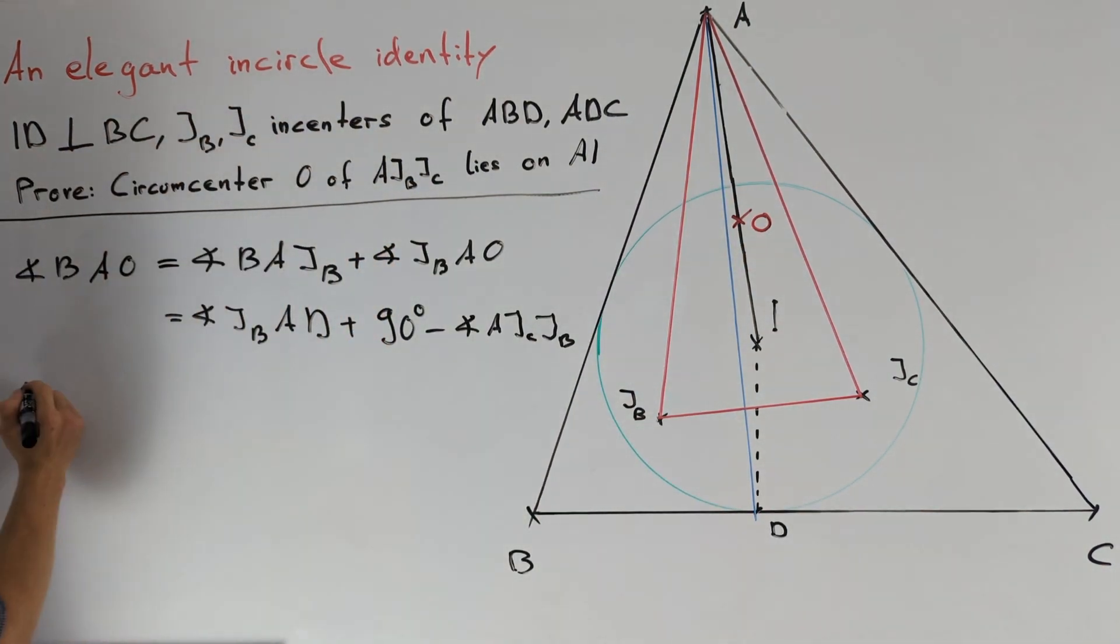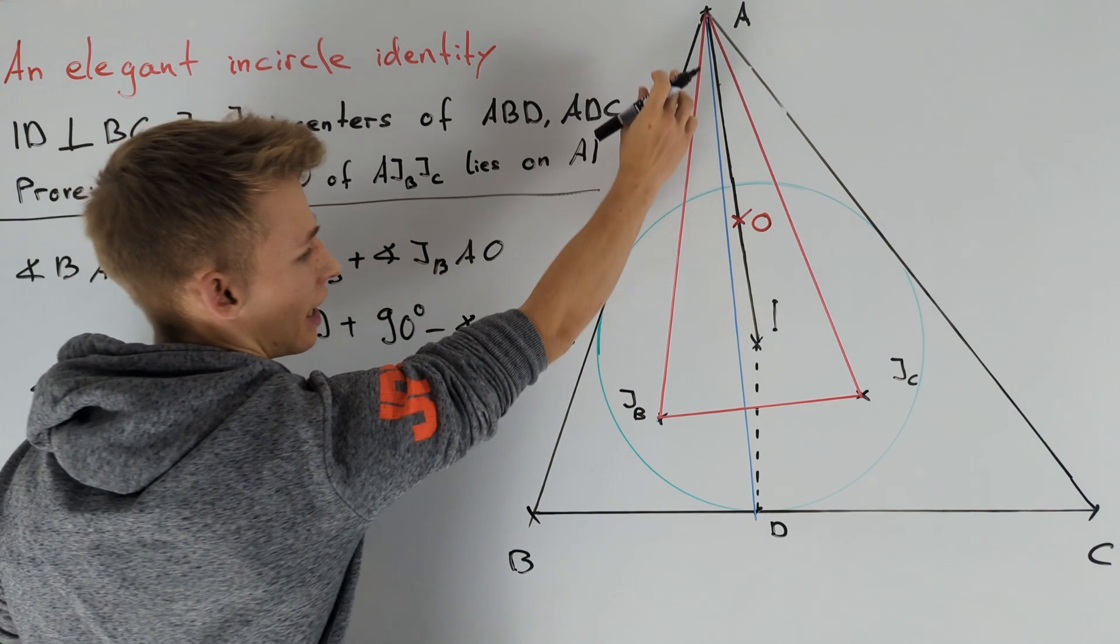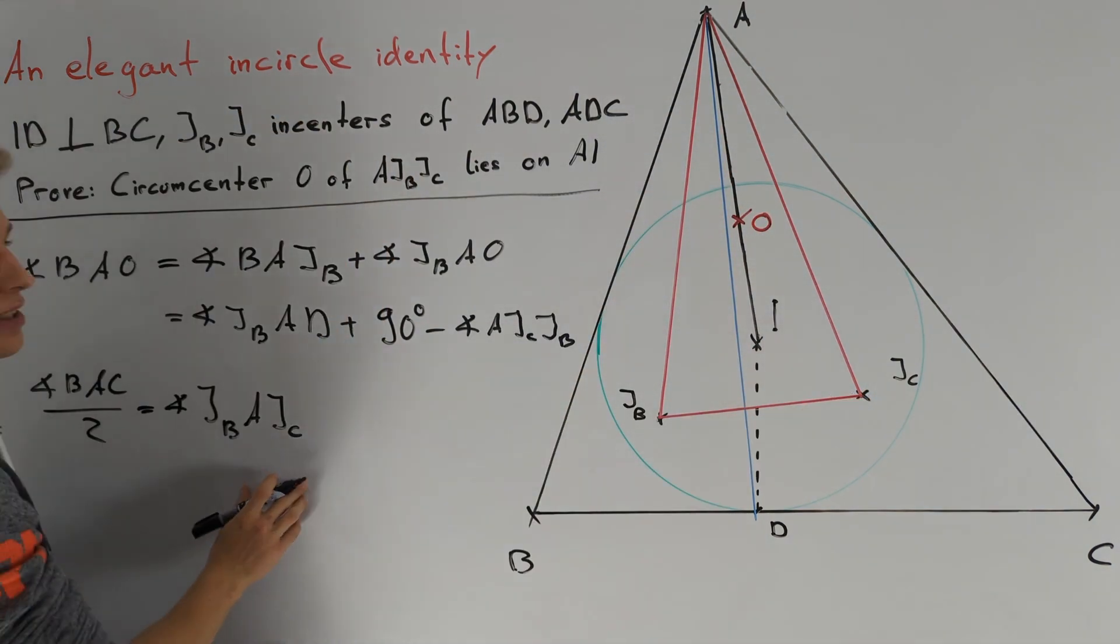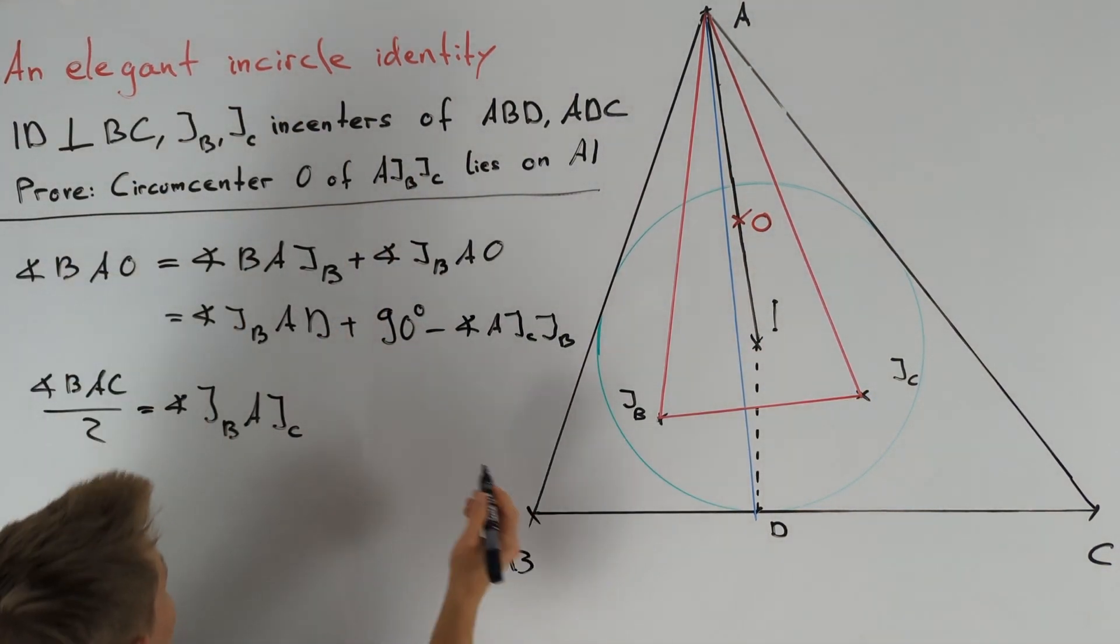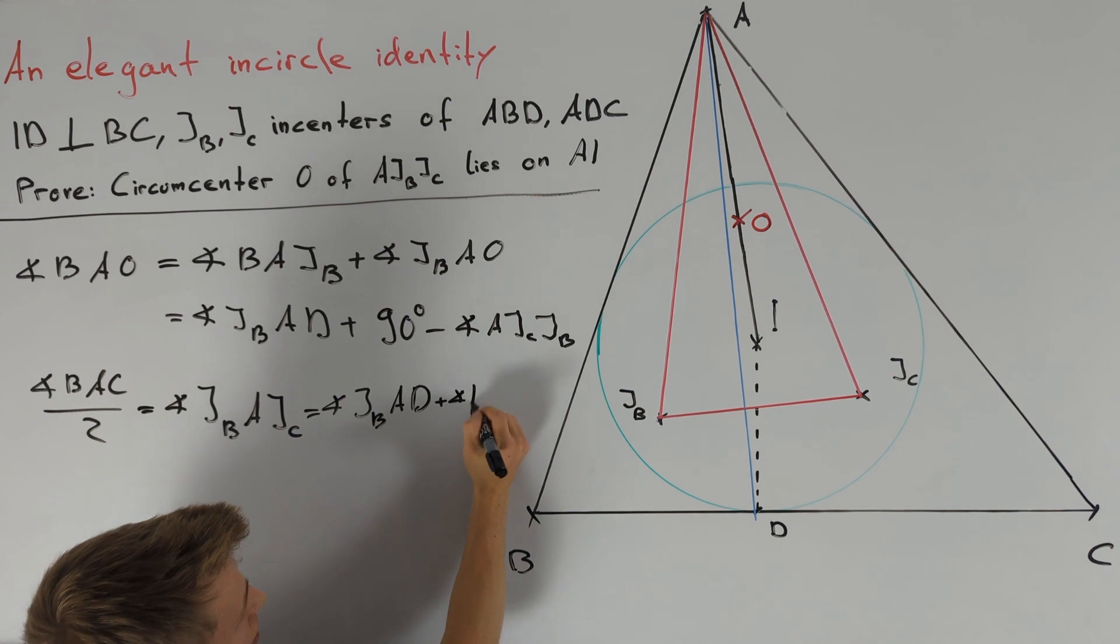We also know that half of angle BAC equals angle JBAJC. This angle can be split into two parts: angle JBAD plus angle DAJC.